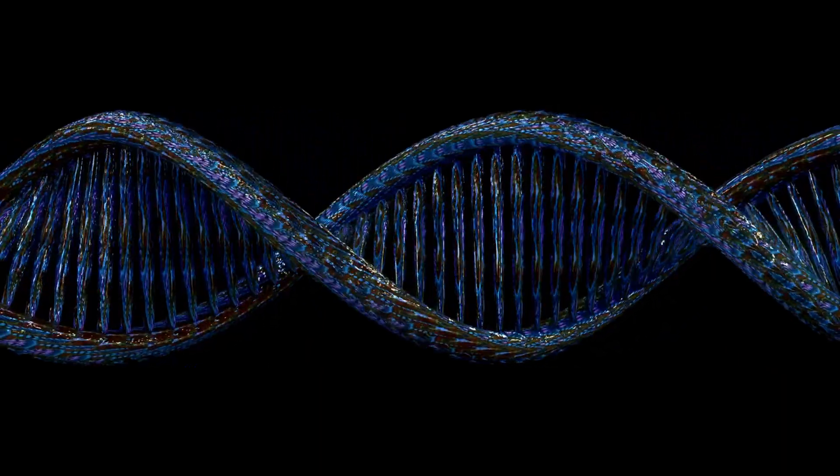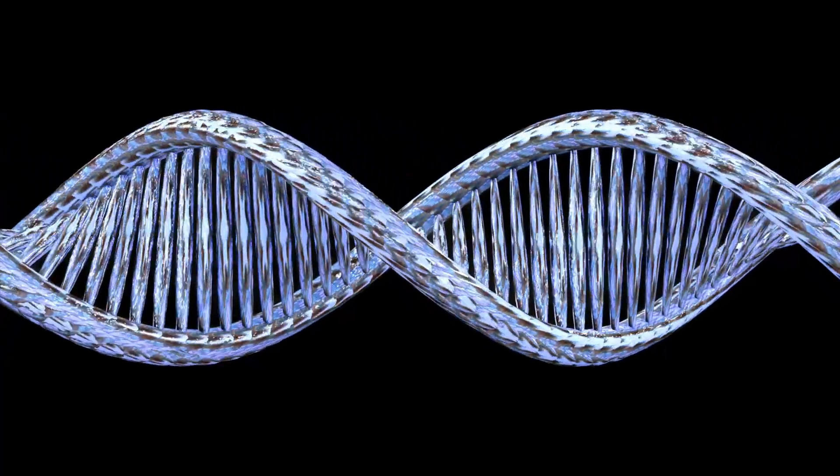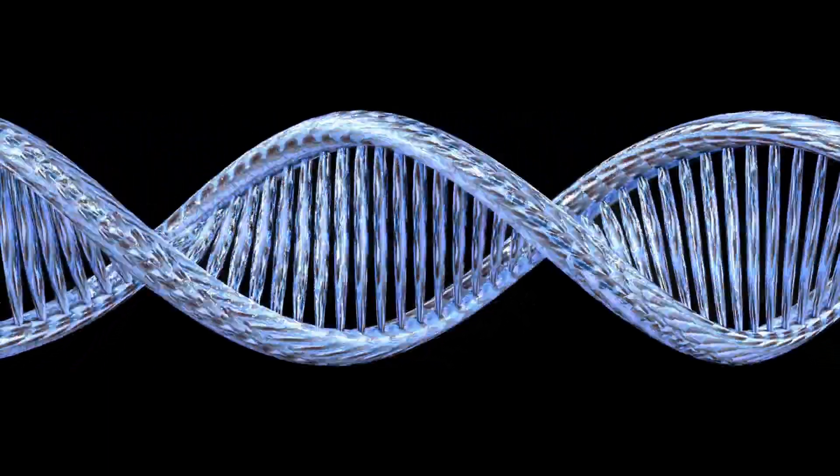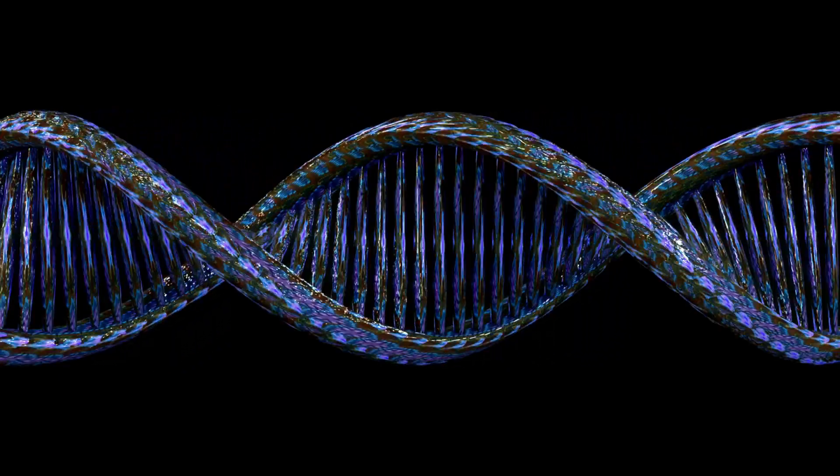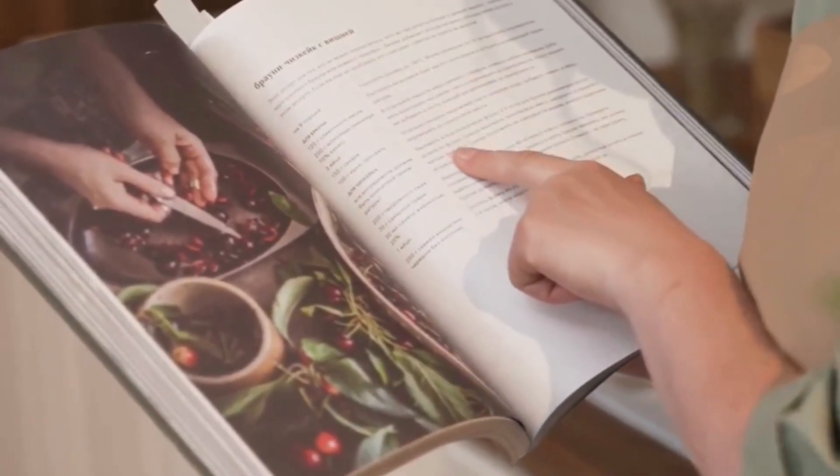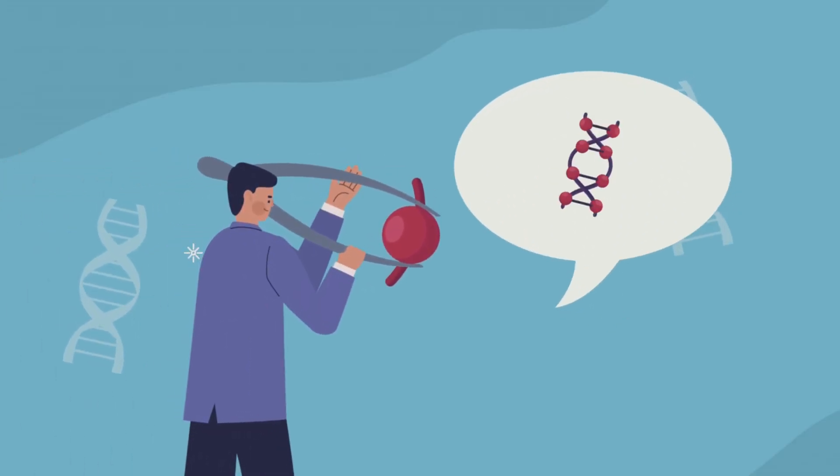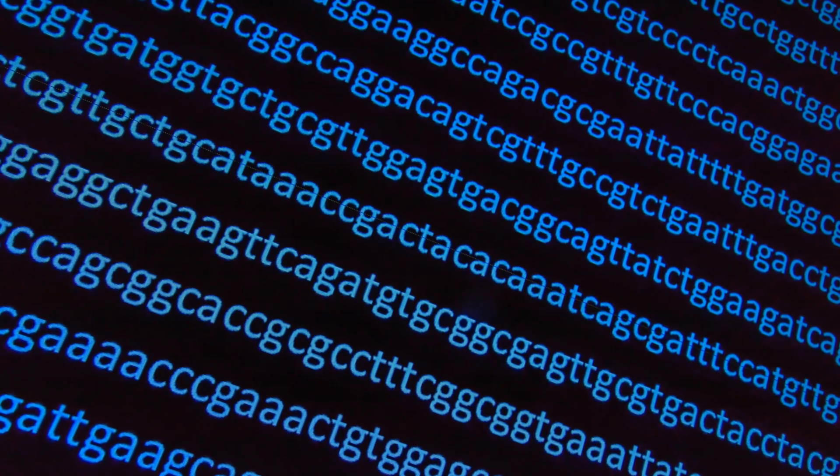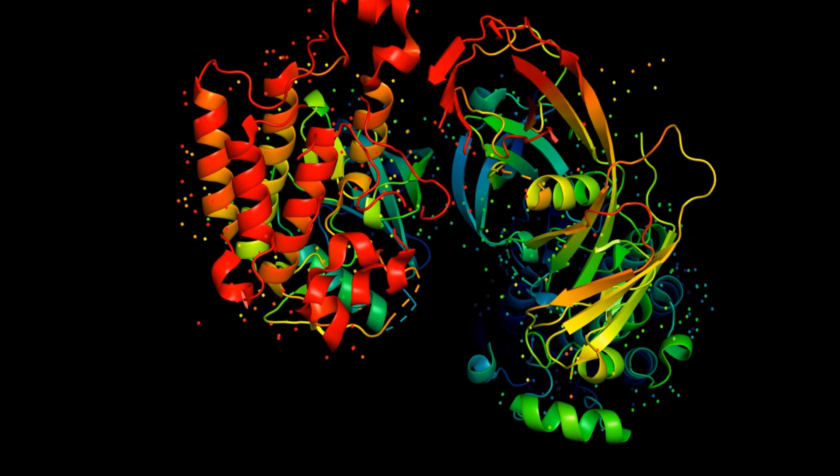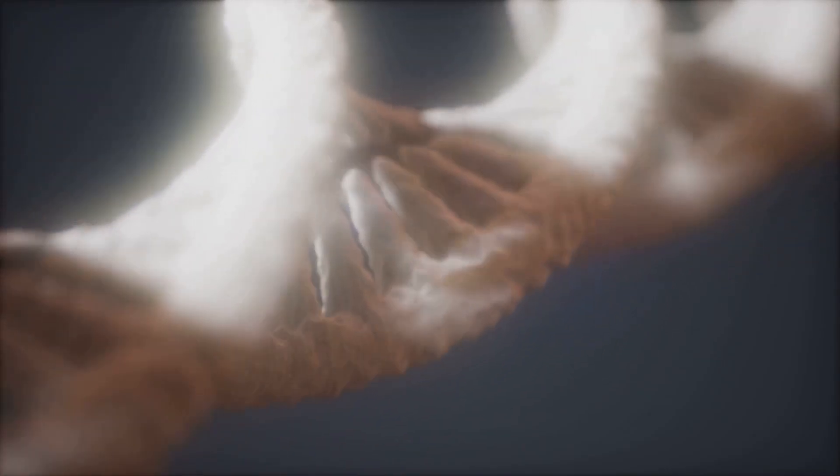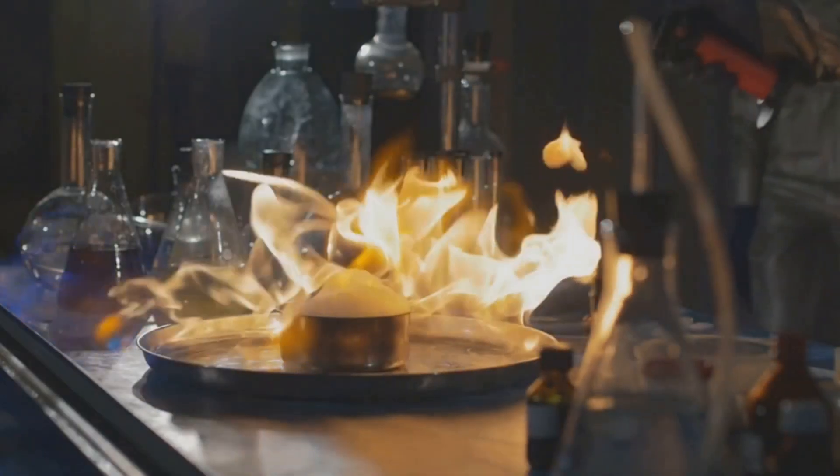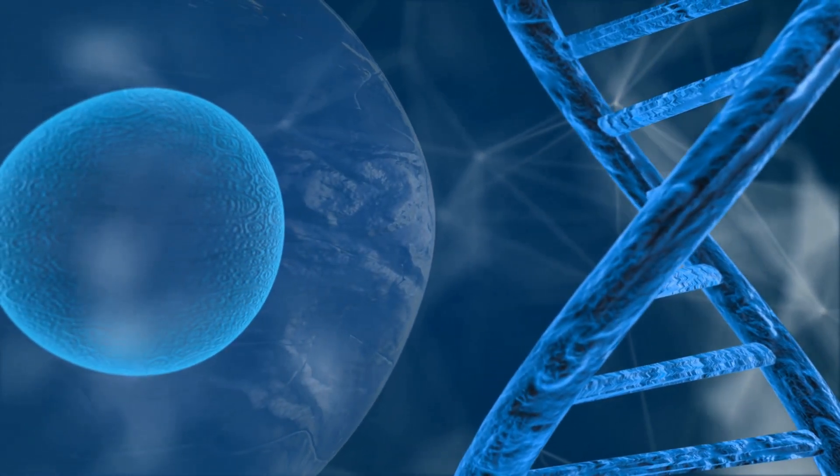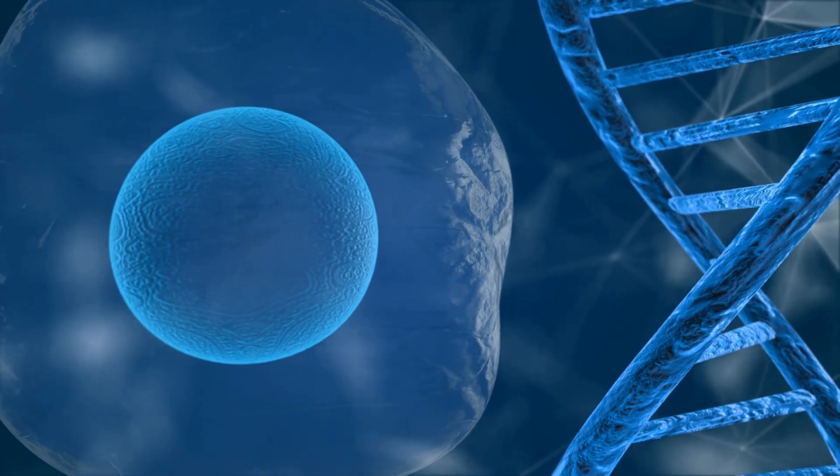Deep within our cells lies the blueprint of life itself, DNA. This remarkable molecule holds the instructions for building and operating every living thing on Earth. But how does this intricate code actually translate into the complex processes that define life? Think of DNA as a comprehensive recipe book, filled with countless instructions. Each gene within DNA acts as a specific recipe, carefully detailing how to make a particular protein, the body's microscopic worker. These proteins are the workhorses of the cell, performing a vast array of functions. Proteins form structures, providing the physical framework for our cells and tissues. They also speed up reactions, acting as catalysts to facilitate essential biochemical processes. And proteins carry out essential tasks, from transporting molecules to defending against invaders. They are the key players in the cellular orchestra.